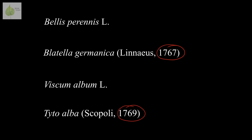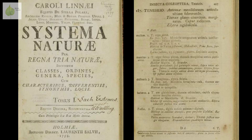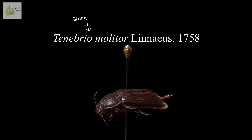A year tells us the year of publication of the original description. So if we look at the mealworm beetle, Tenebrio molitor, we see it was described by Linnaeus in a publication from 1758, which helps us locate that publication if needed. It also helps further distinguish similar names, so it's very helpful, especially when the year is used in scientific works. The genus name, species name, authorship, and year of publication of the original description are usually all the necessary components for you to be able to read and understand a scientific name.